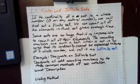Some sets are so large that it is impossible to count all of their elements. The counting numbers are such a set. When a set is so large that its cardinality cannot be expressed in terms of a whole number, we call it an infinite set.